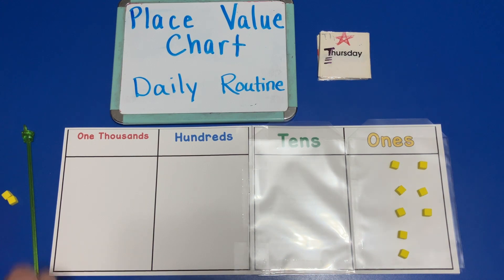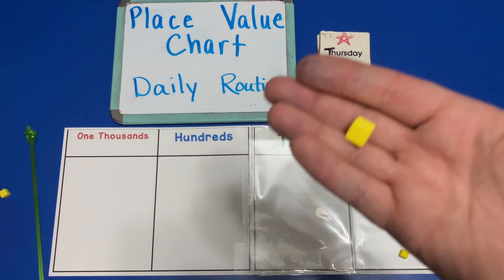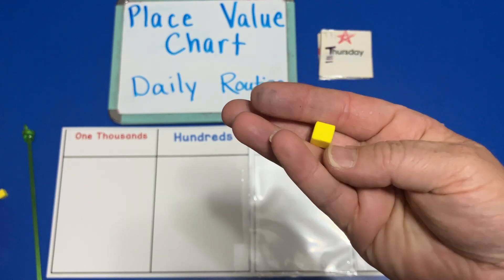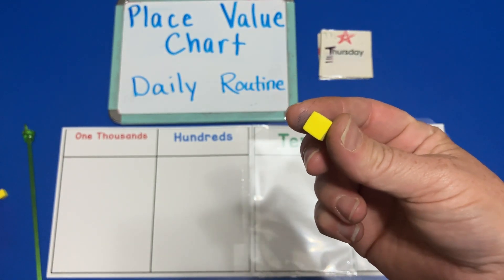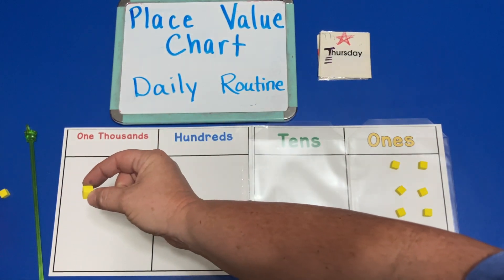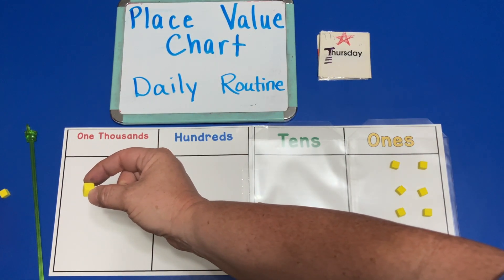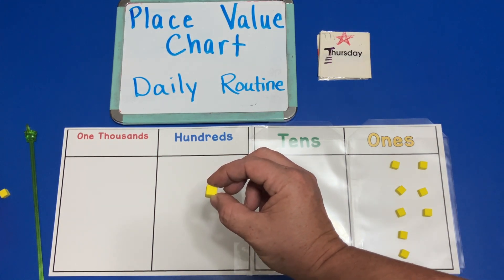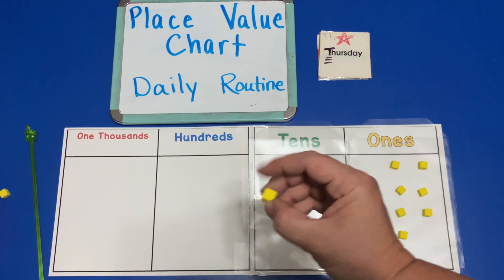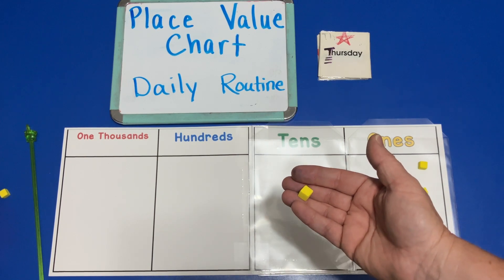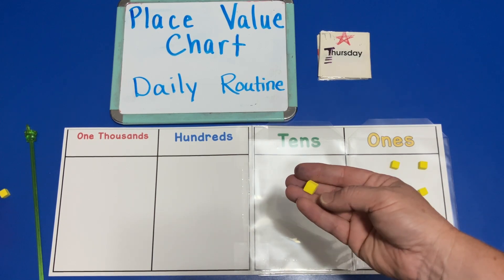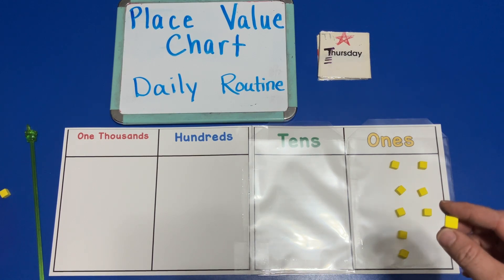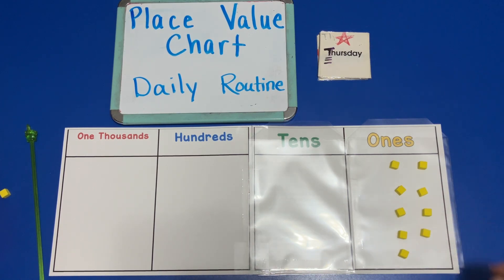On Thursday we take this one unit. Where do we put this one unit on our place value chart? Do we put it in the thousands place? No. Do we put it in the hundreds place? No. Do we put it in the tens place? No. Where do we put this one unit on Thursday? We put it in the ones place.